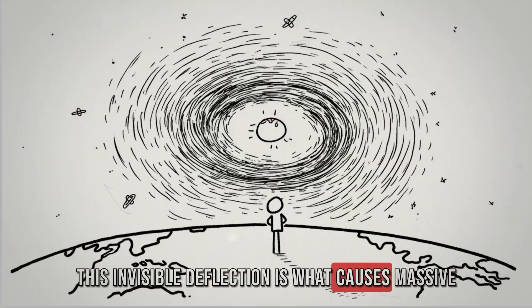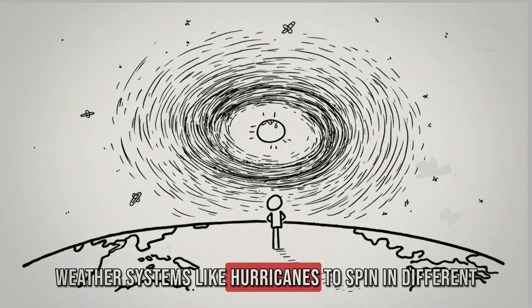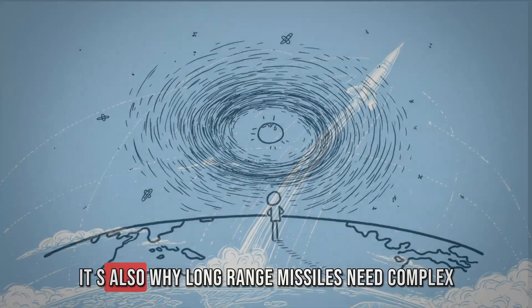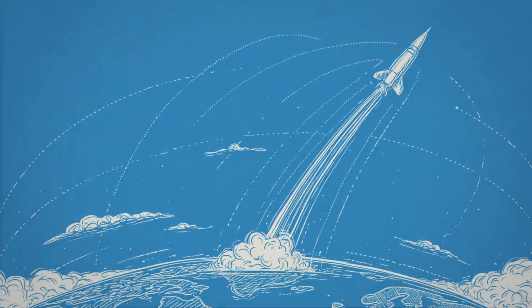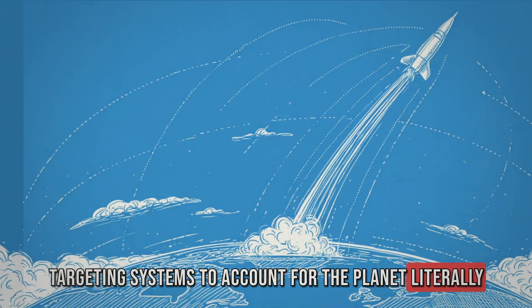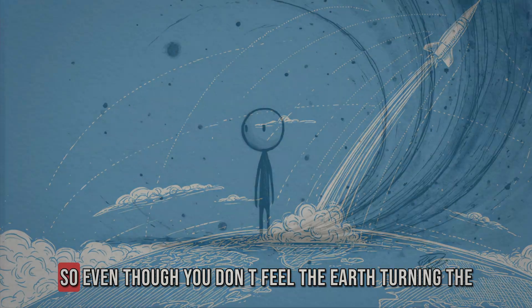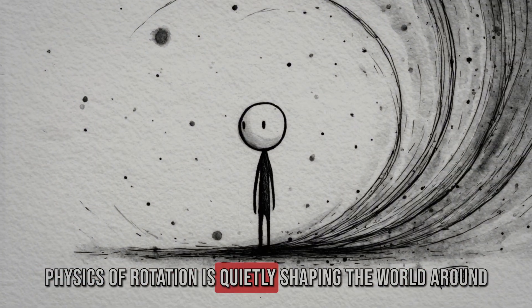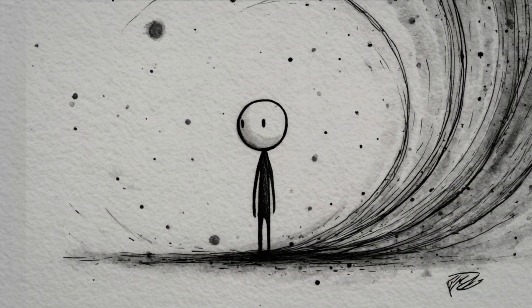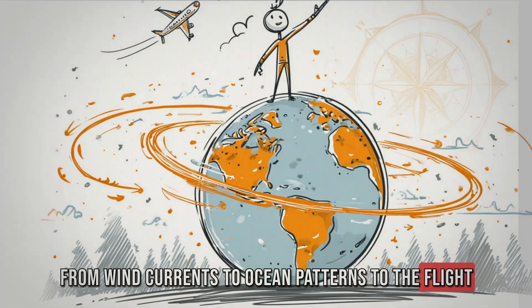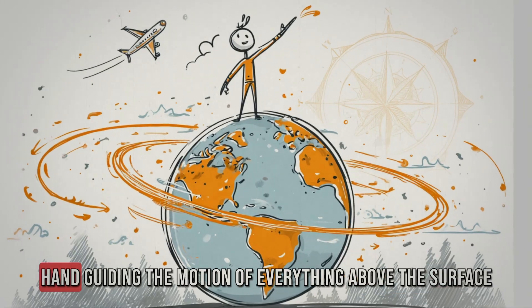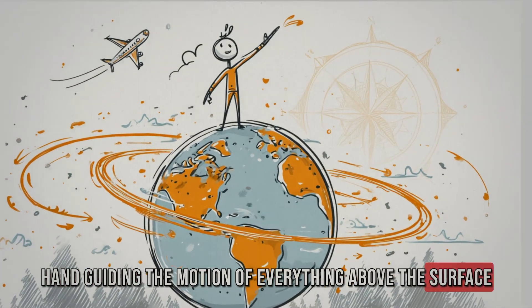This invisible deflection is what causes massive weather systems like hurricanes to spin in different directions in each hemisphere. It's also why long-range missiles need complex targeting systems to account for the planet literally moving underneath them. So even though you don't feel the Earth turning, the physics of rotation is quietly shaping the world around you, from wind currents to ocean patterns, to the flight paths of airplanes. Earth's spin is like an invisible hand guiding the motion of everything above the surface.